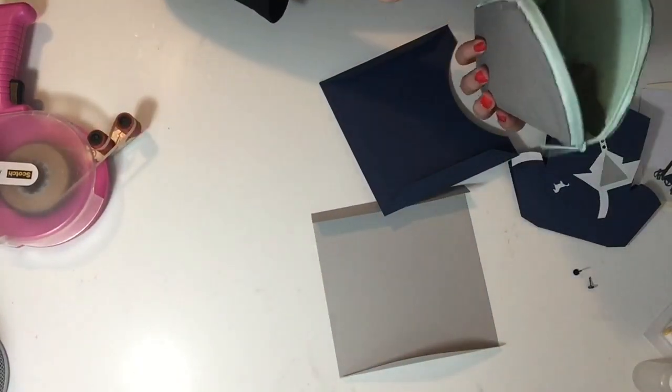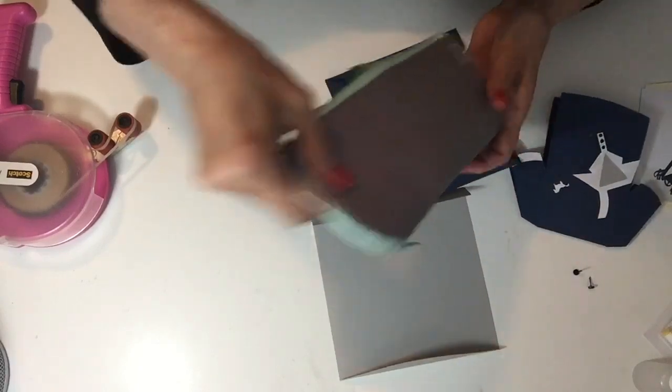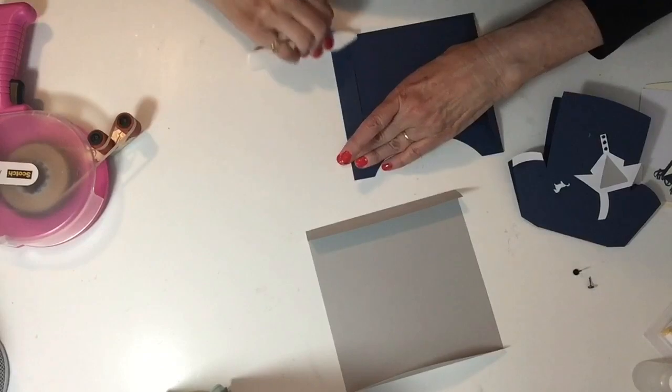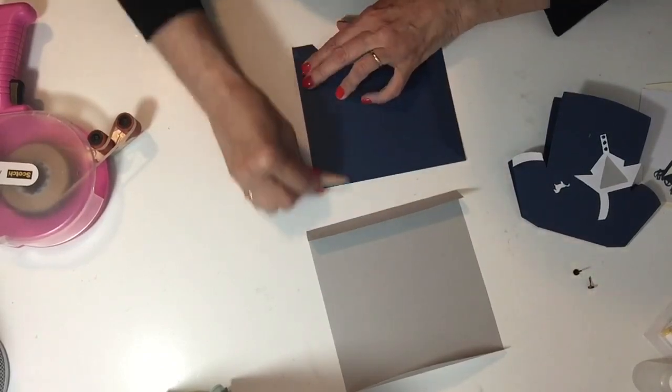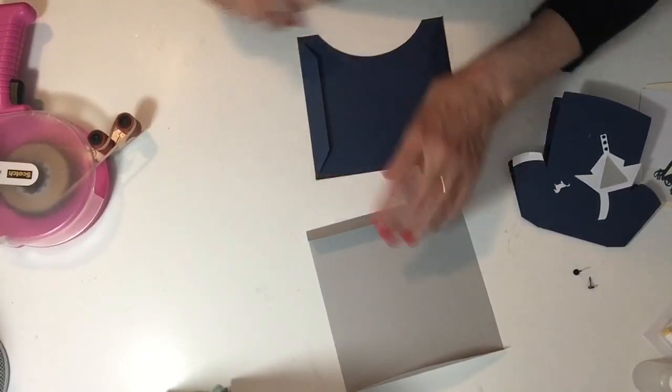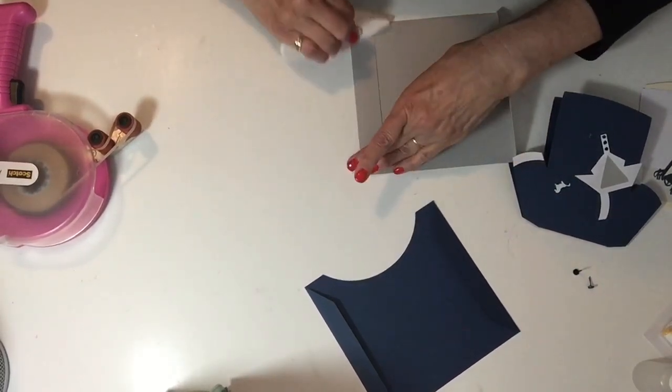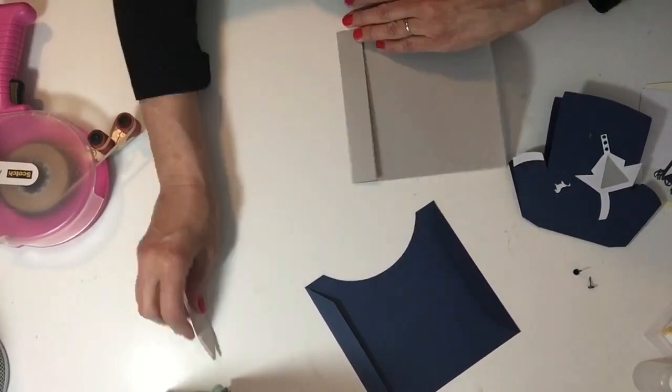You want to take something like a bone folder to make your score lines really nice and crisp so you get a nice clean finish. The envelope is in two parts, which I often do.